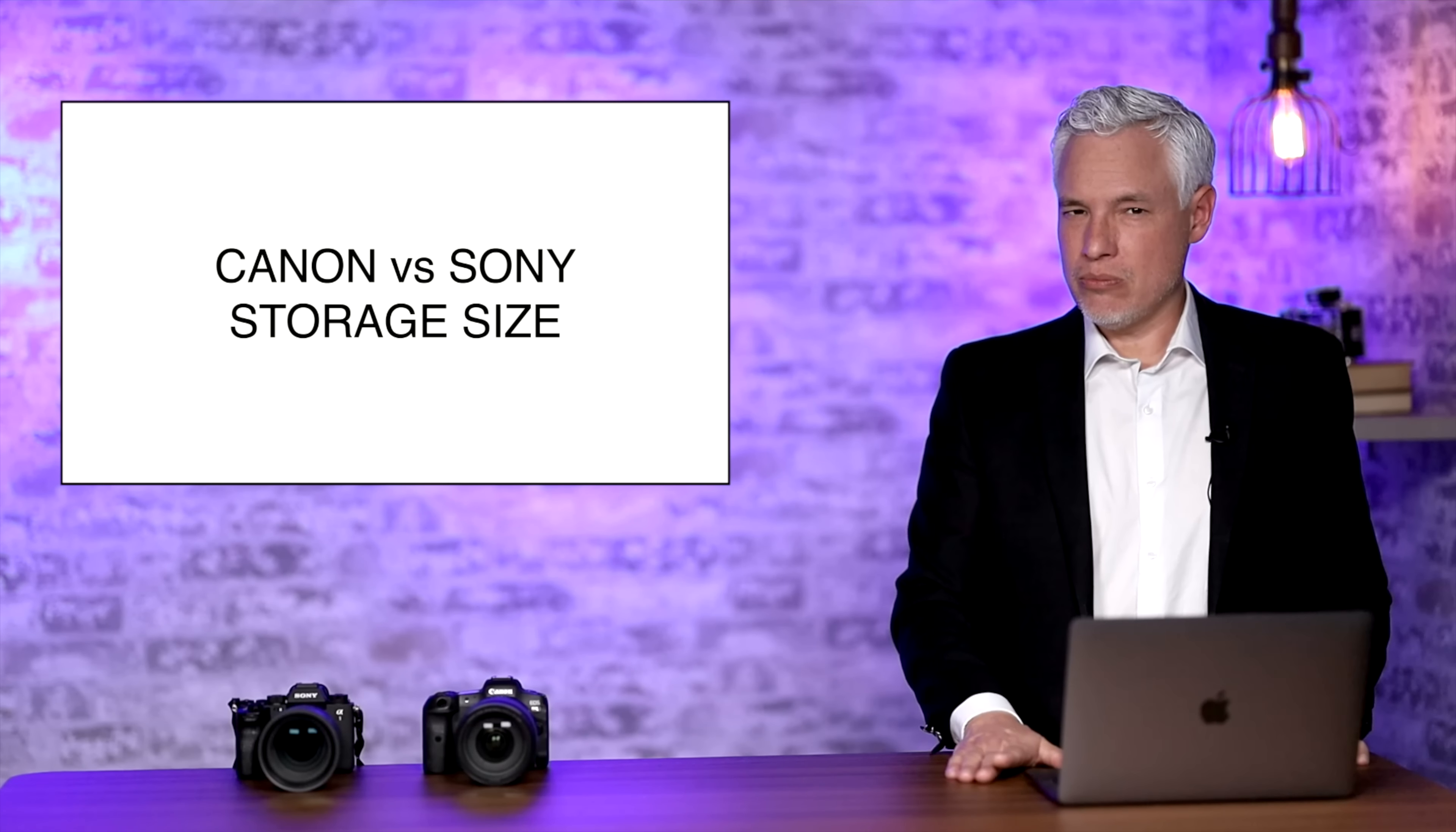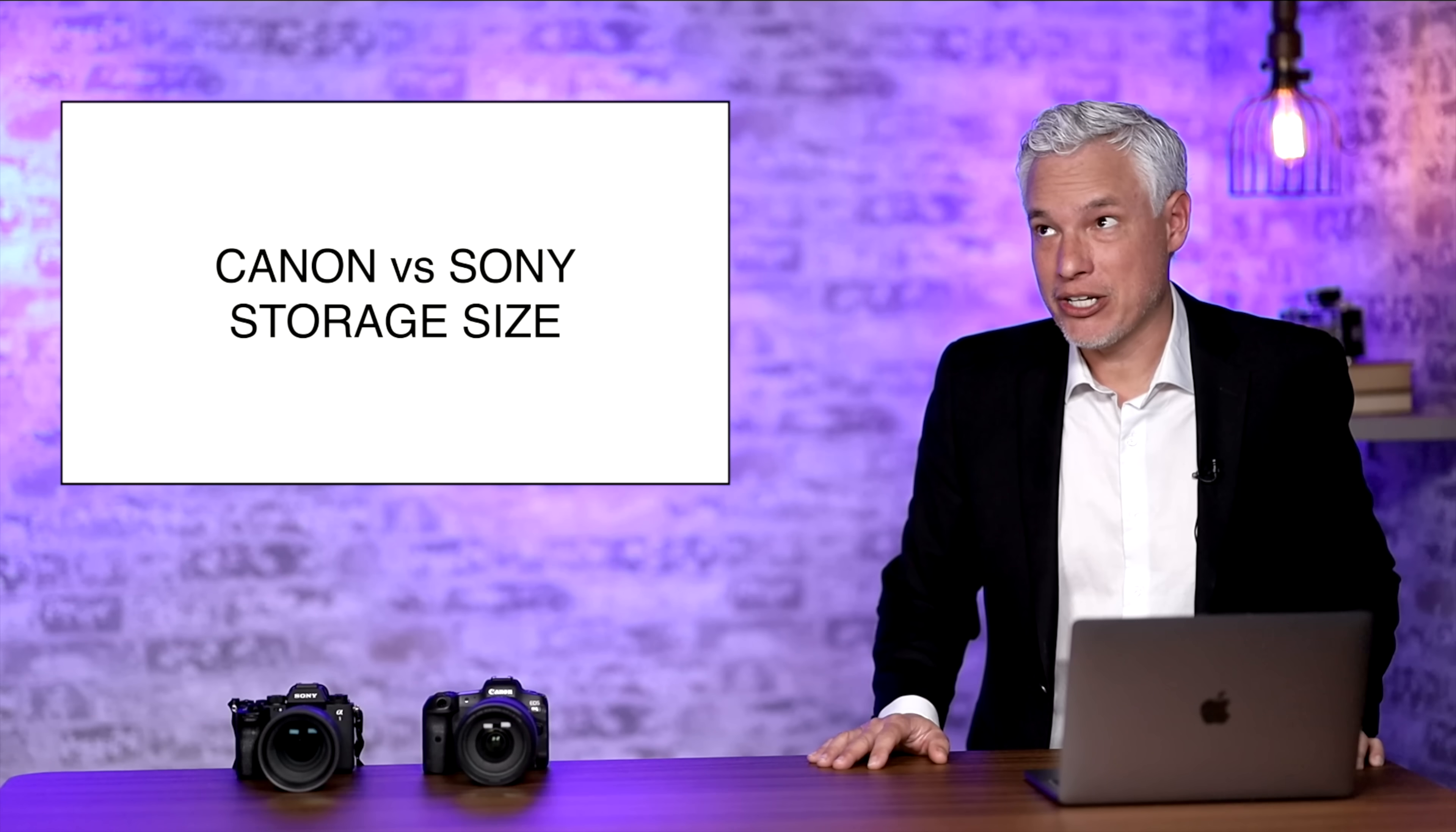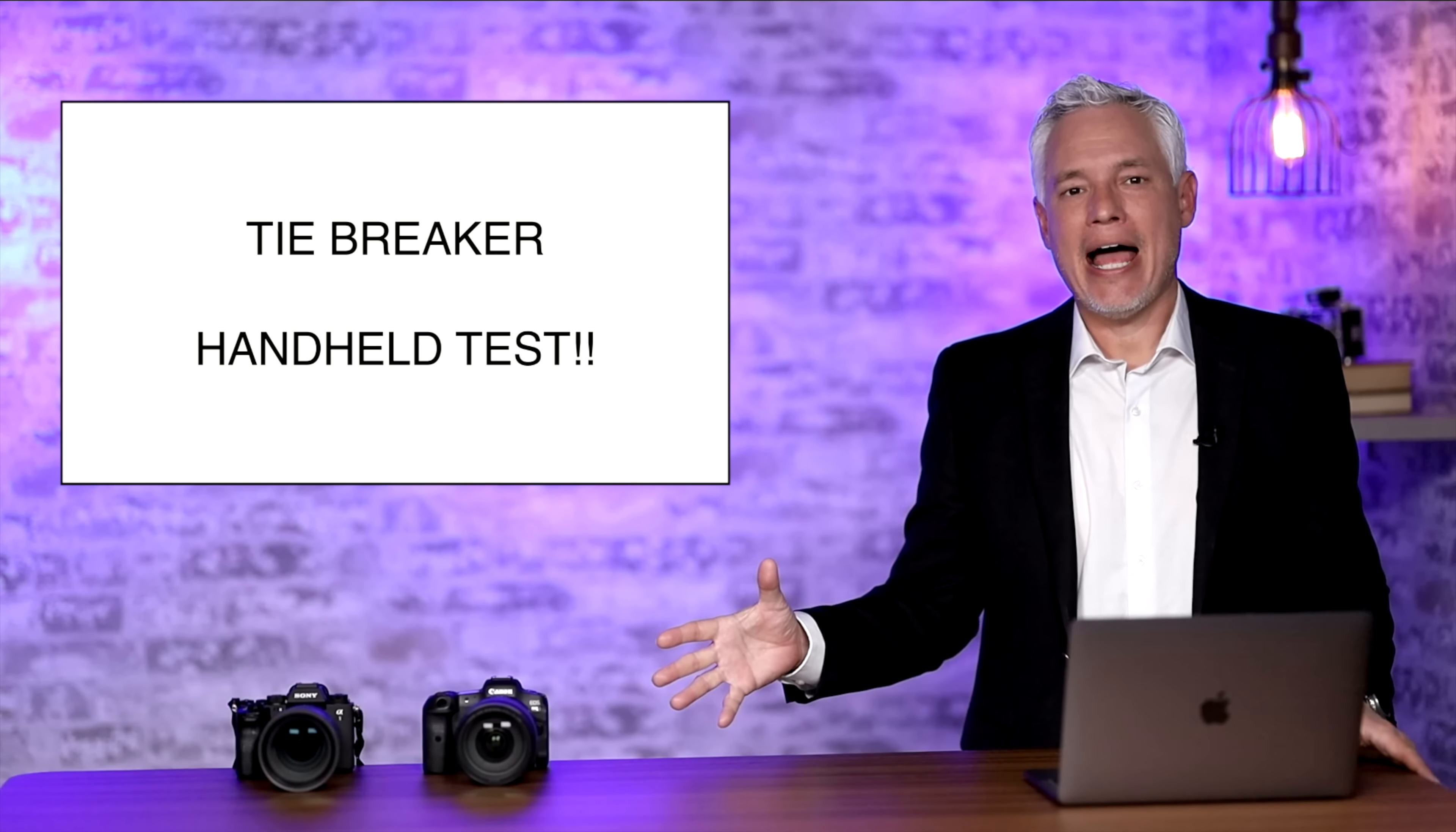But let's talk about storage size here. Each JPEG file on the Canon is about a hundred megabytes. Each pixel shift image consumes about 1.6 gigabytes or sixteen hundred megabytes. So they're significantly bigger. So for storage size I have to give the Canon another point. So right now it's a tie. We need a tie breaker.